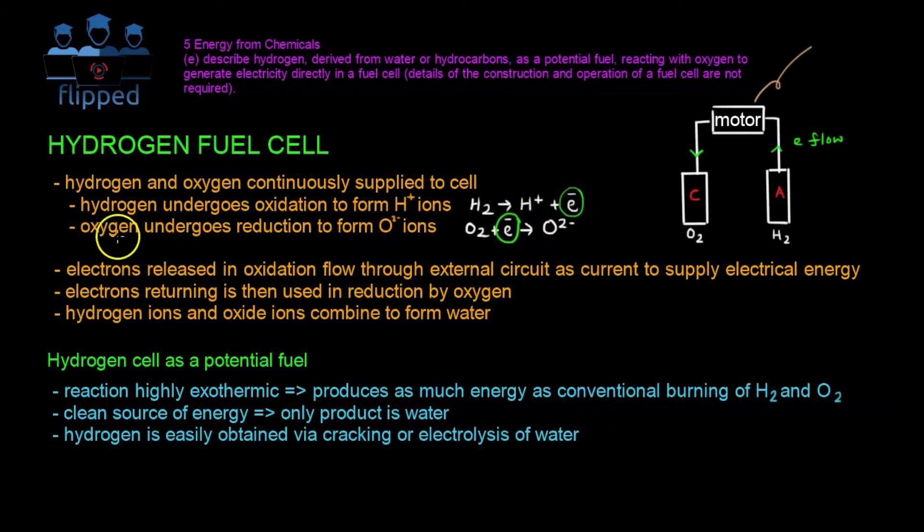And now what do we have? We have, let me show you, we have H plus ion, hydrogen ions, and oxide ions. They actually combine to form water. So it's H plus plus O2 minus to give us H2O. But there's two H here, so we write a two here. And this is what we have, water as the final product, and it's the only product.